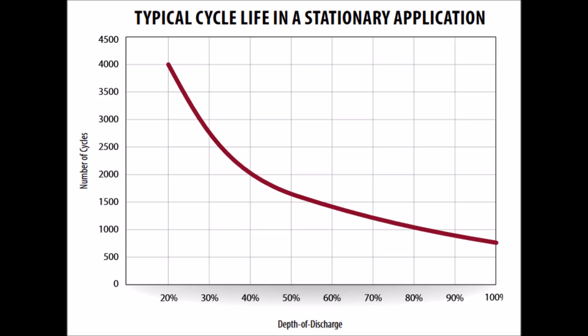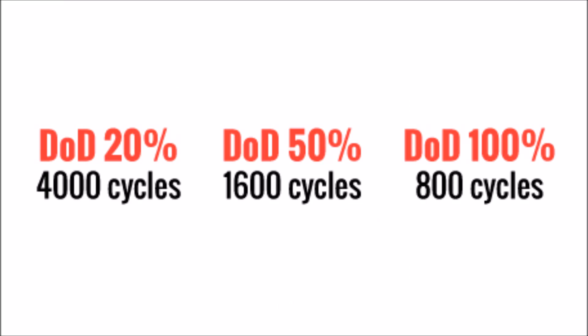Back to our Trojan T105RE battery for a second. This is a chart from the manufacturer showing the number of lifetime cycles on the left and the depth of discharge on the bottom. As you can see, the more that you discharge the battery, the lower the lifetime cycles gets. Past 50%, it gets pretty ugly. If we sized our battery bank so that we never discharged more than 20%, we would get 4,000 cycles out of those batteries. However, if we went to 50%, that would drop to 1,600 cycles, and going all the way down to 100% would only give us 800 cycles.